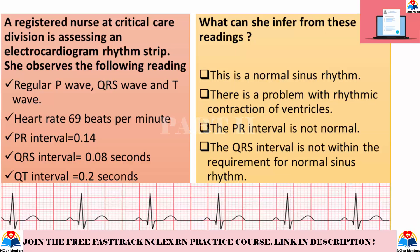A registered nurse at the Critical Care Division is assessing an electrocardiogram rhythm strip. She observes the following reading. What can she infer from these readings? Options: this is a normal sinus rhythm; there is a problem with rhythmic contraction of ventricles; the PR interval is not normal; the QRS interval is not within the requirement for normal sinus rhythm.